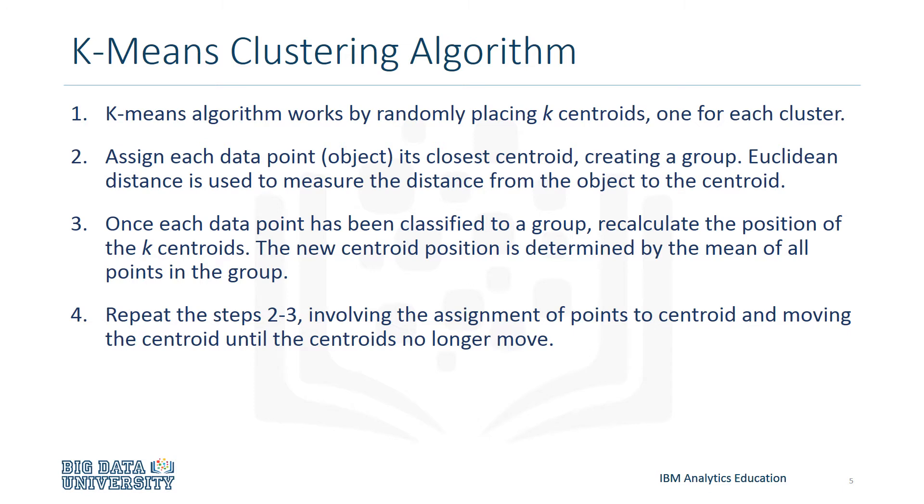The next step in using a K-means algorithm is to assign each data point or object its closest centroid, creating a group. Euclidean distance is used to measure the distance from the object to the centroid. Note, however, that you can also use different kinds of distance measurements, not just Euclidean distance. Euclidean distance is used because it's the most popular.